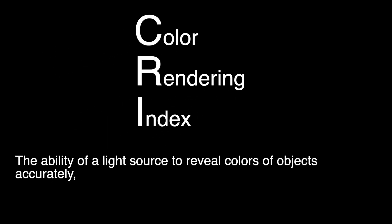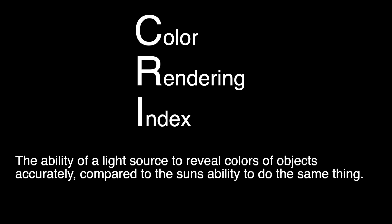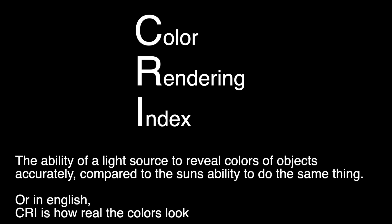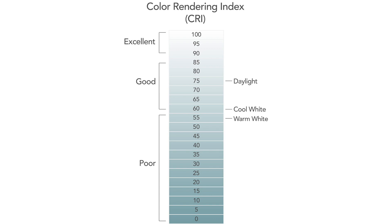A downside to LEDs can be their CRI. CRI in technical terms is the ability of a light source to reveal colors of objects accurately compared to the sun's ability to do the same thing. Basically, CRI is how real the color looks. The CRI scale goes from 0 to 100, with 0 being lights of very poor color rendition and 100 being lights with great color rendition like natural sunlight.